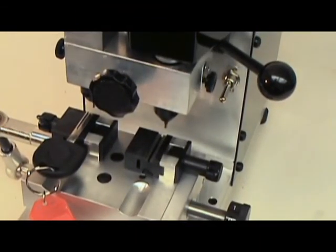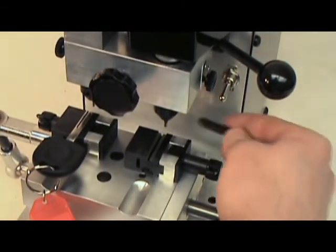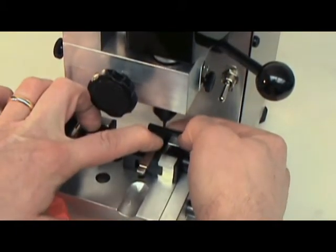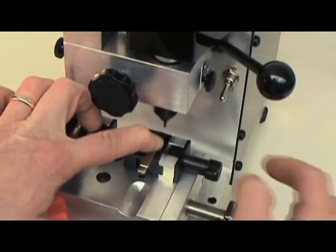We're now almost ready to duplicate our key. Insert a blank key into the right vise, using the tip stop to align it. Tighten the key into the vise.